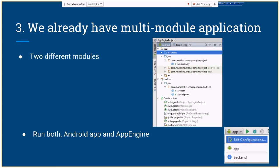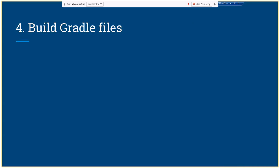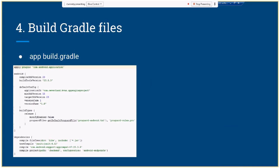Now we can run either one of these two modules — we can run our app or our backend. When Android Studio created this module and Android application, it created two really important build Gradle files. There is one for the Android application, which has compiled versions, dependencies, build types, and so on, and one build Gradle file for the backend module.